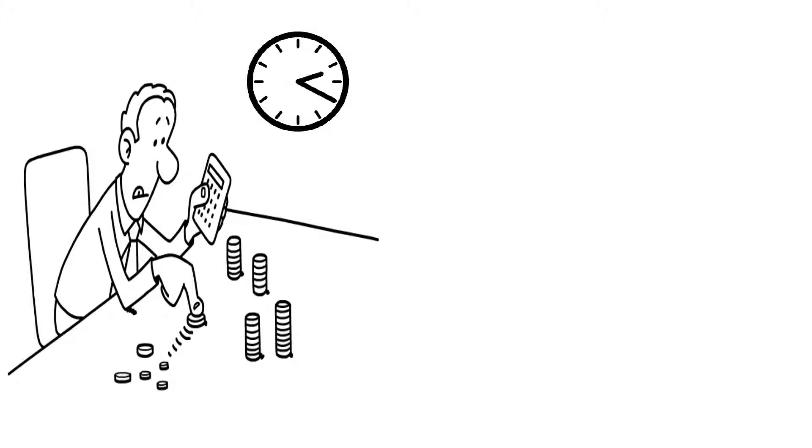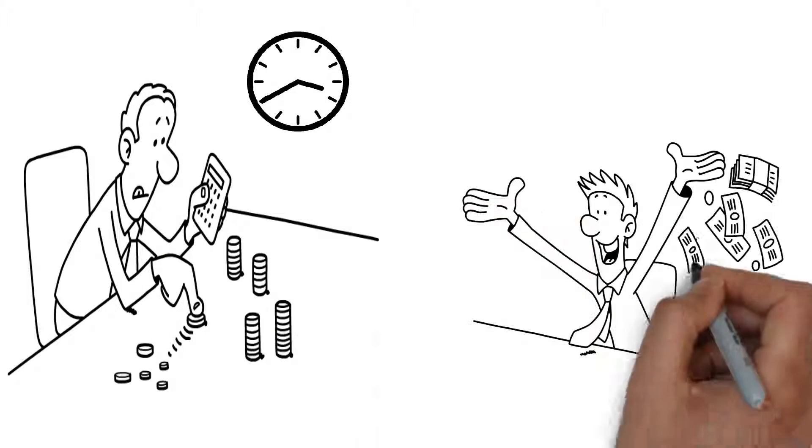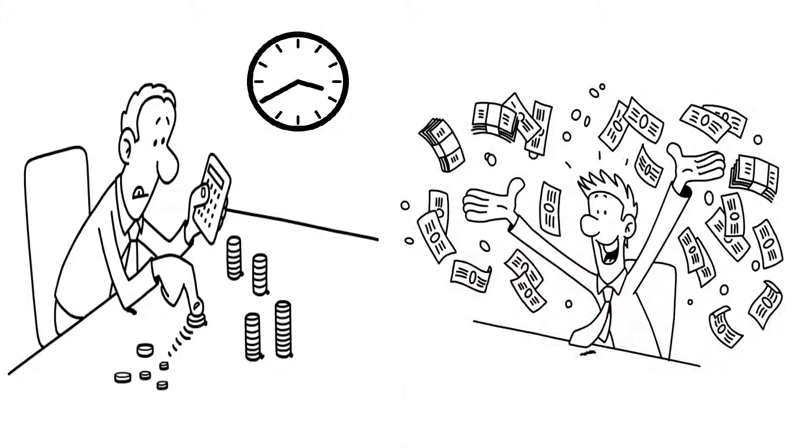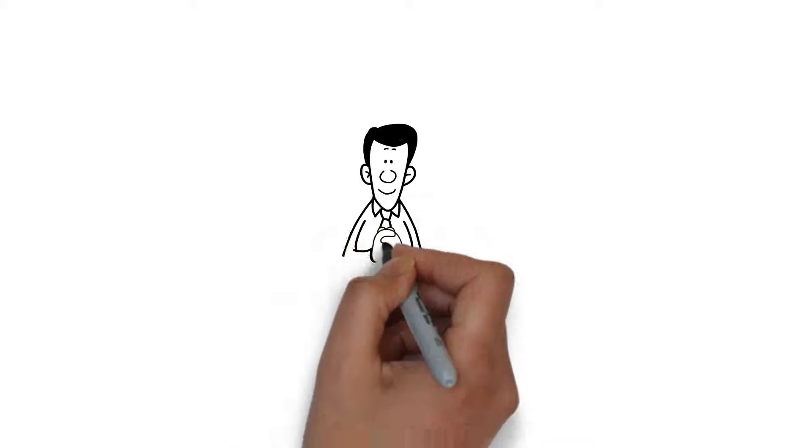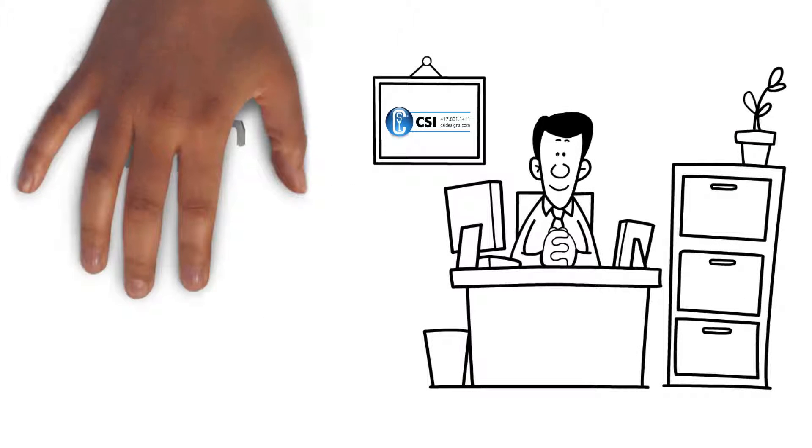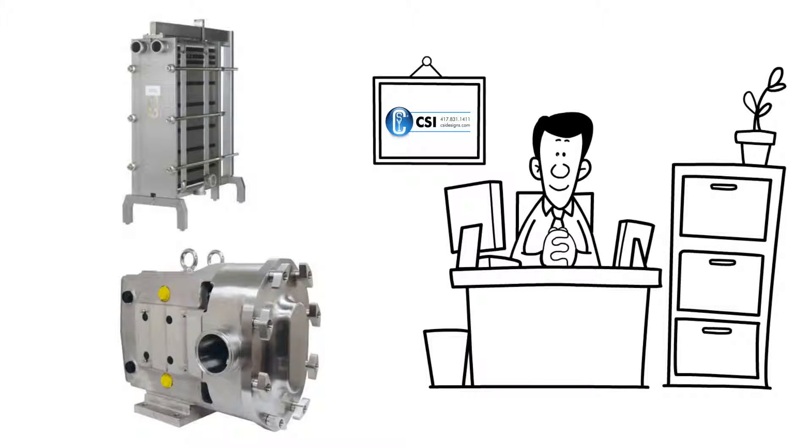Don't waste your time working for pennies when you can sell pumps or heat exchangers for thousands. Central States Industrial provides stainless steel liquid processing equipment to food, dairy, and beverage plants.